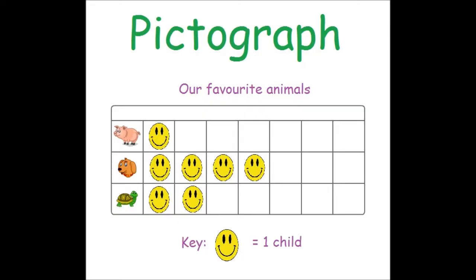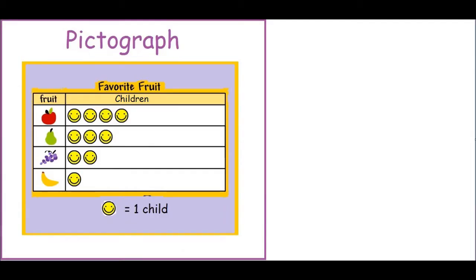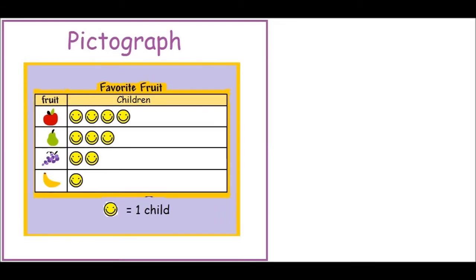Let us look at another pictograph. This is our pictograph. Every pictograph must have a name, and the name of our pictograph here is Favorite Fruit. Here we see that there is a column for all the different types of fruit, and there is another column that shows all the different children who like the fruits. An important part of our pictograph is called the key, and our key here is: one smiley face is equal to one child.